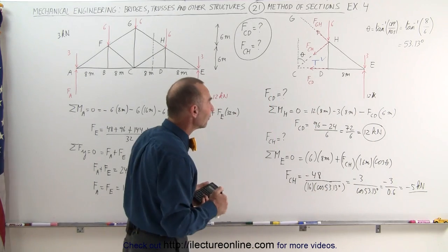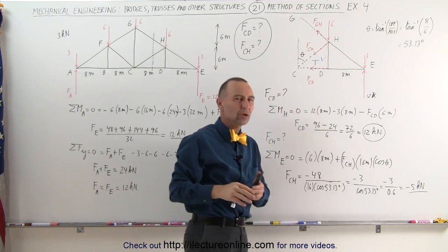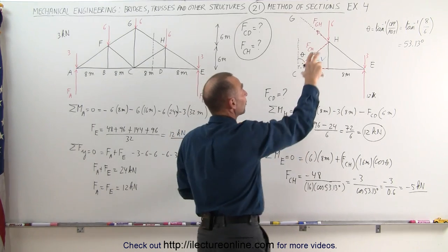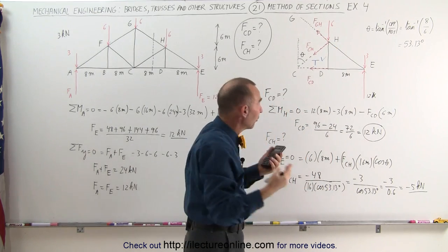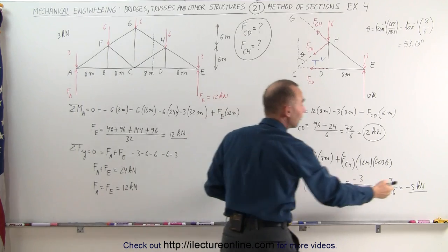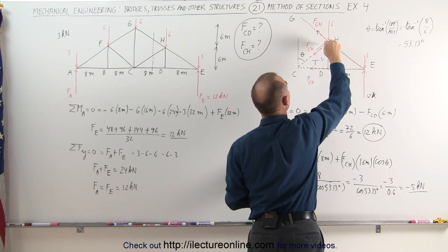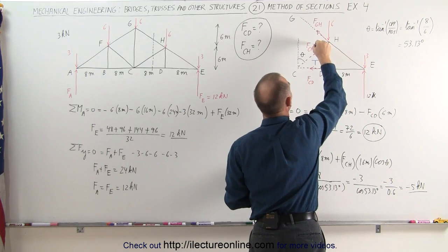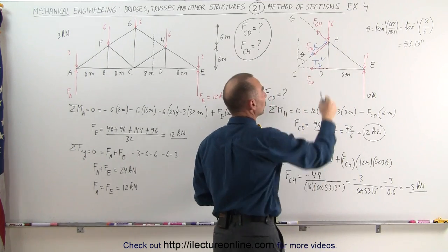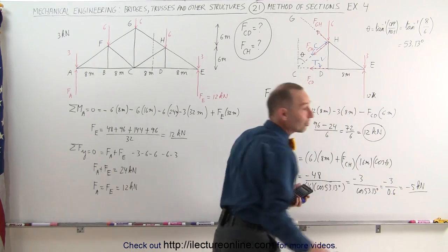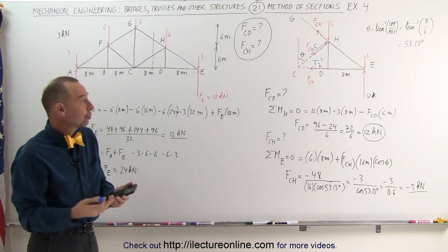We got a negative answer. In the method of sections, we draw all forces away from the cut section (assuming tension). A negative result means the force is in the opposite direction — the member is actually under compression. So member CD is under tension and member CH is under compression with a magnitude of 5 kilonewtons.